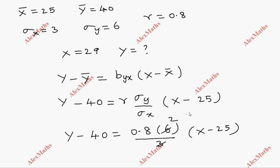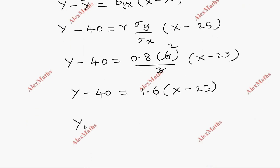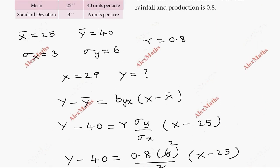This is 1.6. So y minus 40 equals 1.6 into x minus 25. This is 1.6x minus 40. y minus 40 equals 1.6x minus 40.